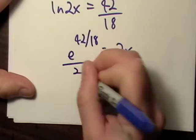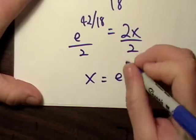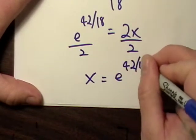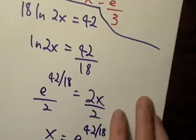Divide by 2, divide by 2, x equals e to the 42 over 18 divided by 2. And let's just figure out what that is.